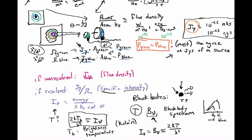If you're making maps of extended emission on the sky where things are resolved — where whenever you point your telescope at it, you're only seeing part of the whole thing — then you'll want to use units of specific intensity.